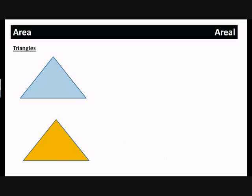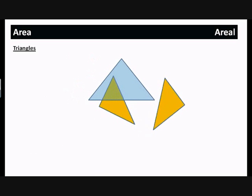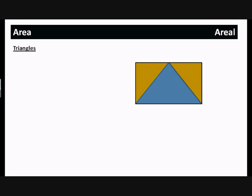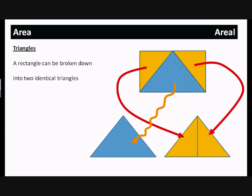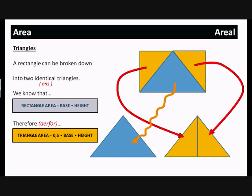Now triangles. If we take a triangle, you can make a copy of it, split that copy in two right down the middle, and move the pieces around until they make a rectangle. Basically, two triangles that are the same can be put together to make a rectangle. So a triangle is half of a rectangle. A rectangle can be broken down into two identical triangles. We know that rectangle area is base times height. Therefore, triangle area is half base times height, or 0.5 times base times height. Write that down, pause the film, and move on when you're ready.